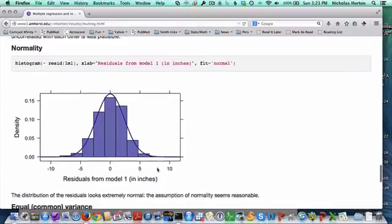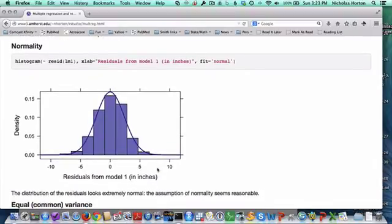Normality actually looks pretty good here. If we look at the distribution of the residuals, they do seem to be really pretty normally distributed. That assumption seems reasonable here.